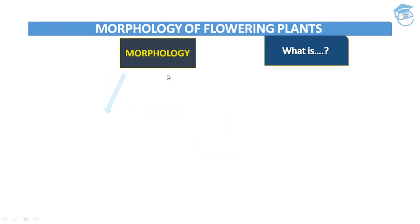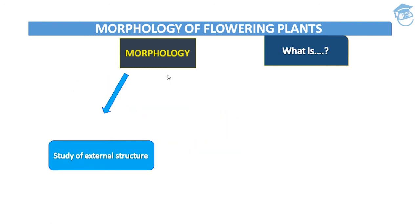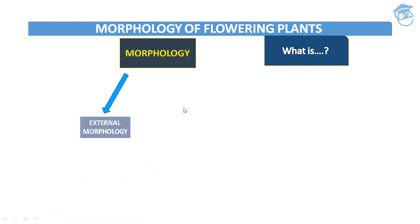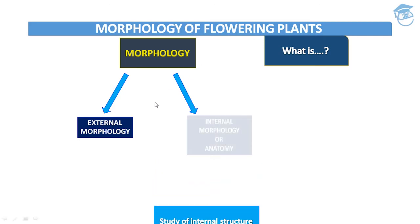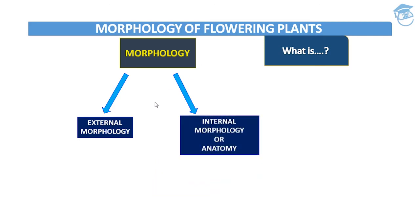First is external morphology, wherein we study about the external structure. Second is internal morphology, which we also call anatomy, wherein we study about the internal structure of flowering plants. Please note that internal morphology and anatomy are both the same.